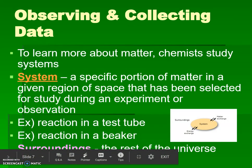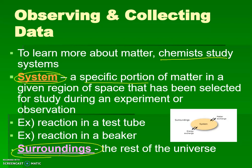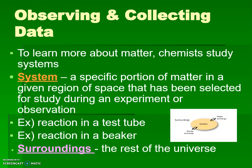When we talk about gathering data in the scientific method, we always look at a specific system. Since chemistry studies the matter and change of the entire universe, we have to be really specific. That specific portion of matter in our region of space is what we're looking at — everything else is considered the surroundings. The system could be inside a test tube or beaker, with a very clear defined point we are examining.